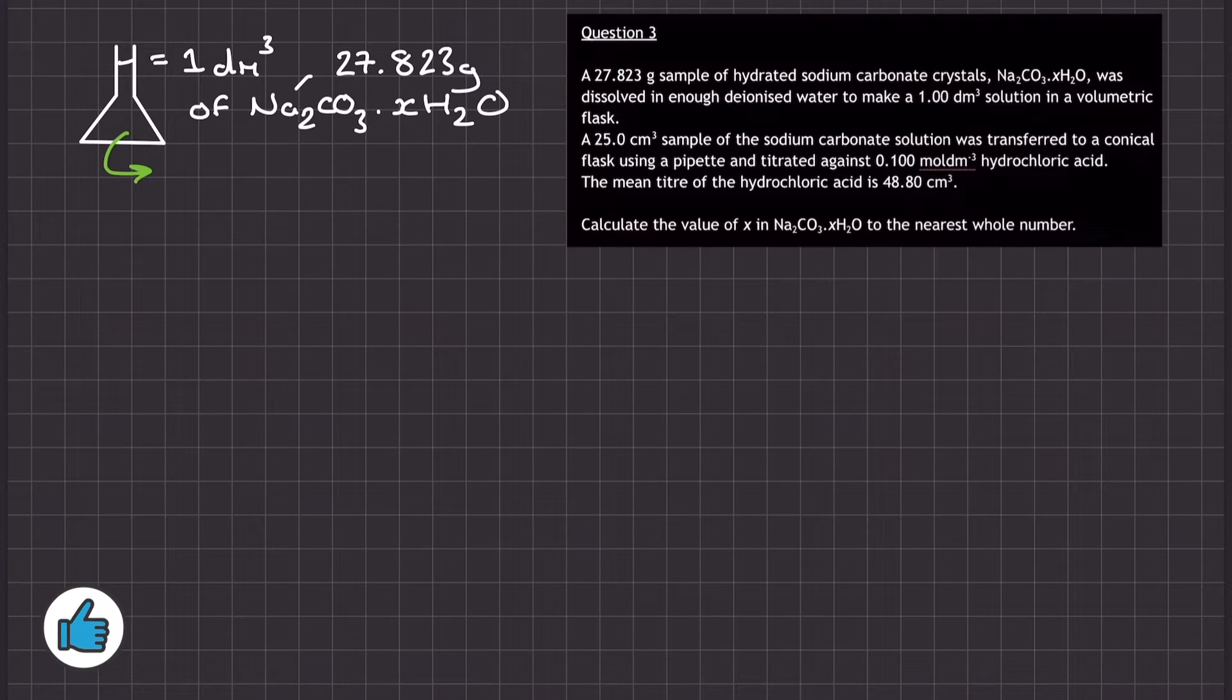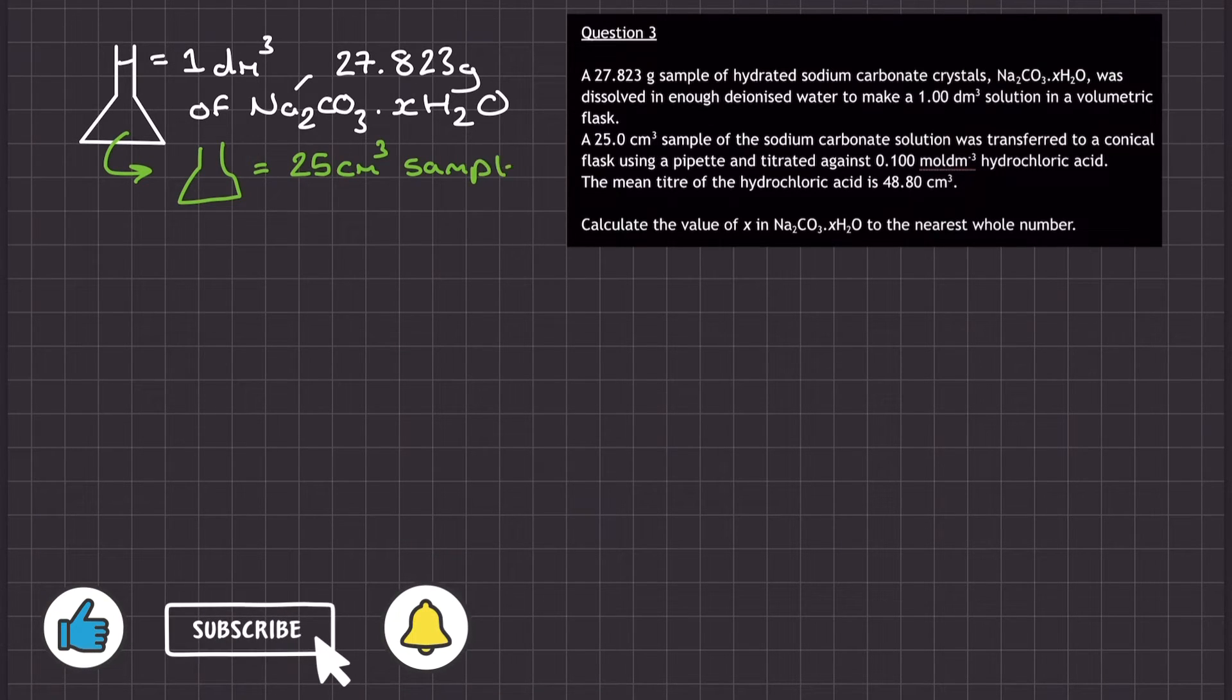In this scenario, 27.823 grams of hydrated sodium carbonate is added to enough deionized water to make a 1 decimetre cubed solution. That's 1,000 centimetres cubed.